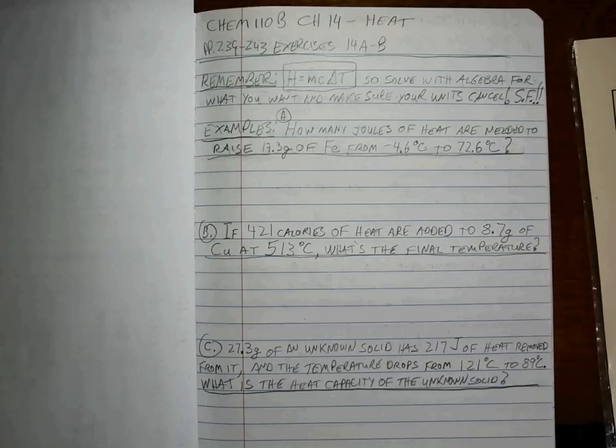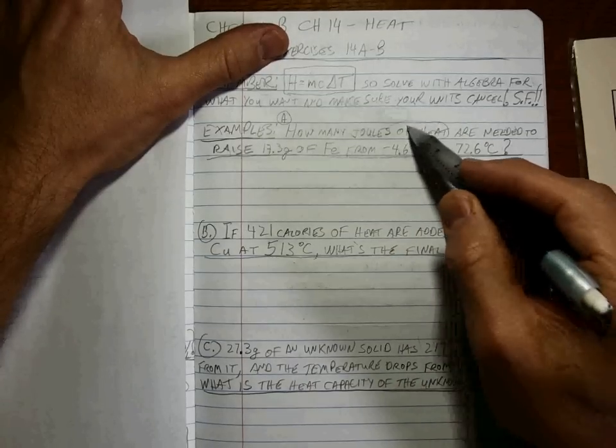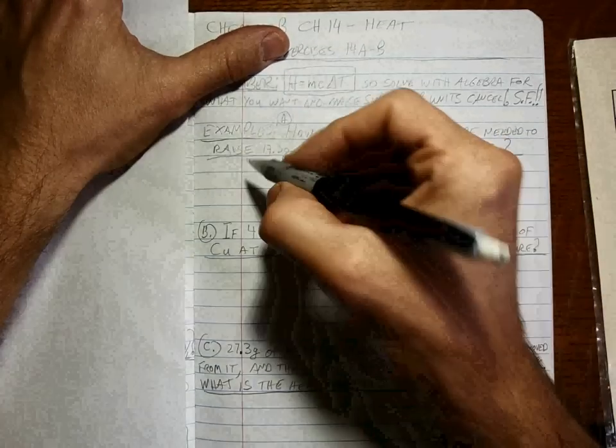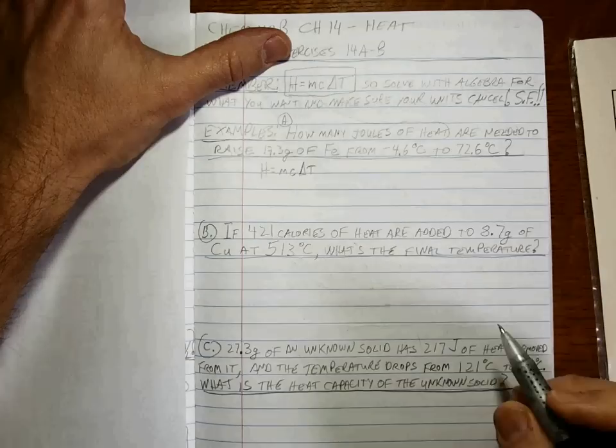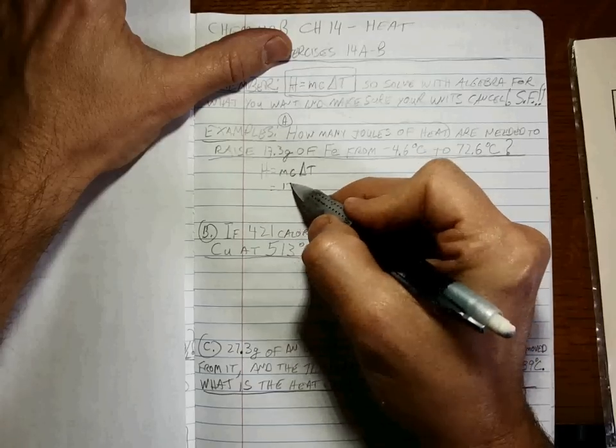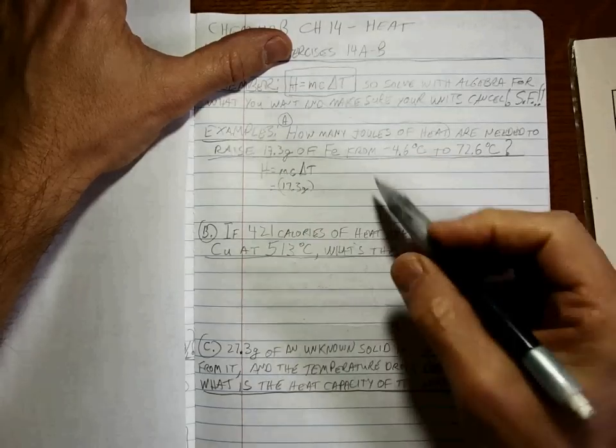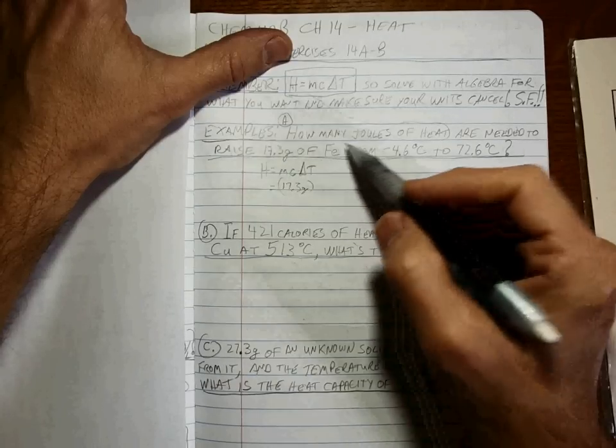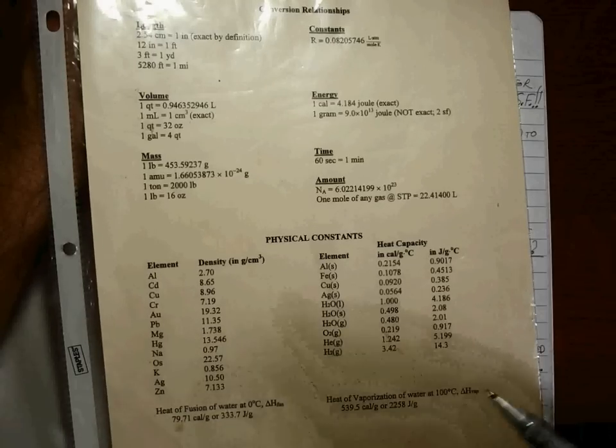Alright, you're back. Let's take a look. Joules of heat needed to raise, so heat is what we want. If we're solving for heat, we're just going to use H = mc∆T. We're already ready. What's the mass? Well that's 17.3 grams. What's c? C is the heat capacity and that's different for every material, so we have to find the heat capacity for iron.